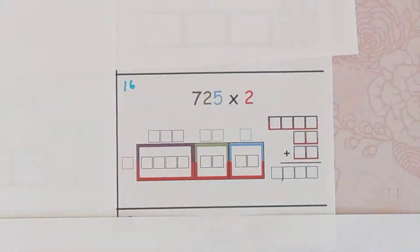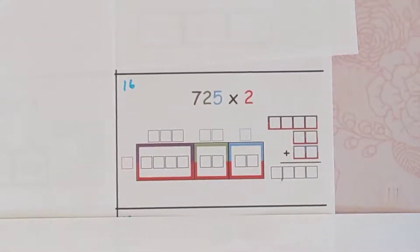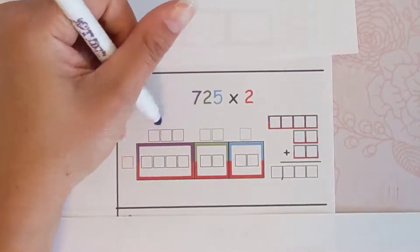We are going to take the number 725 and put it into expanded form along the top, and you can use the colors too if you get stuck.